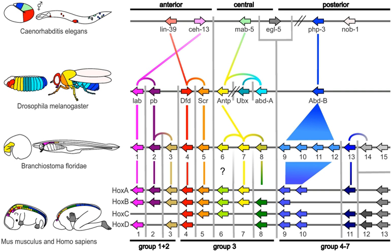Another key concept is that species do not differ much in their structural genes, such as those coding for enzymes. What does differ is the way that gene expression is regulated by the toolkit genes. These genes are reused, unchanged, many times in different parts of the embryo and at different stages of development, forming a complex cascade of control, switching other regulatory and structural genes on and off. This multiple pleiotropic reuse explains why these genes are highly conserved, as any change would have many adverse consequences which natural selection would oppose.